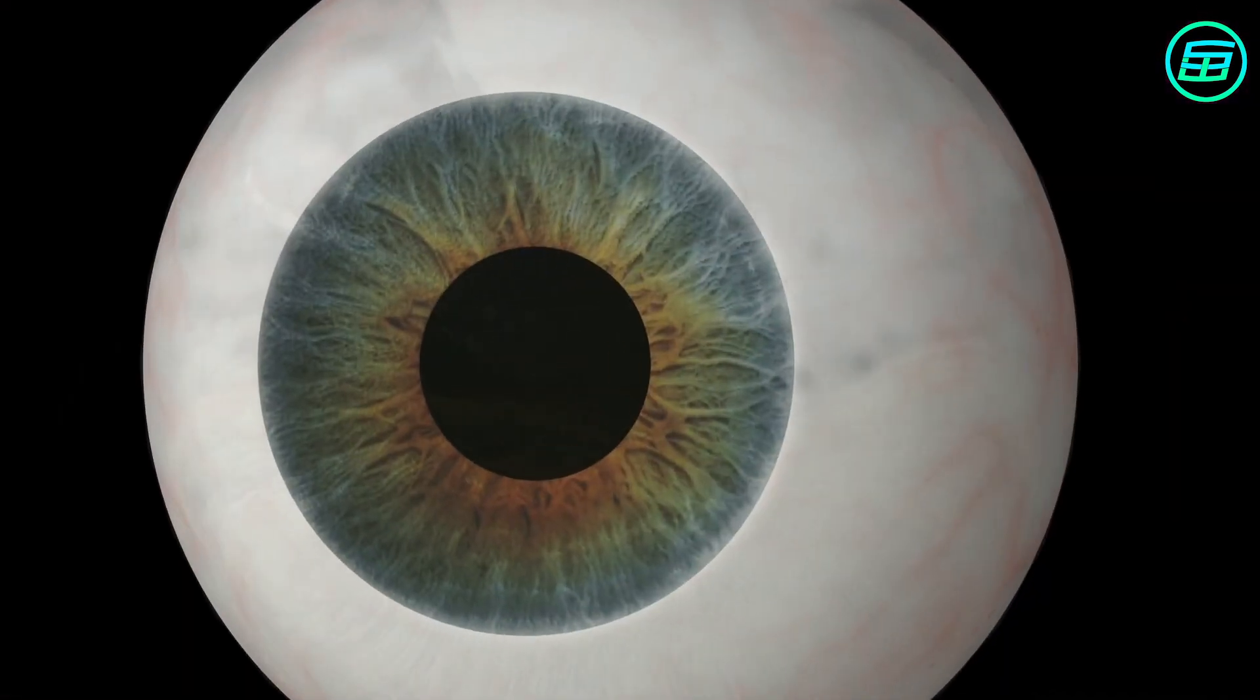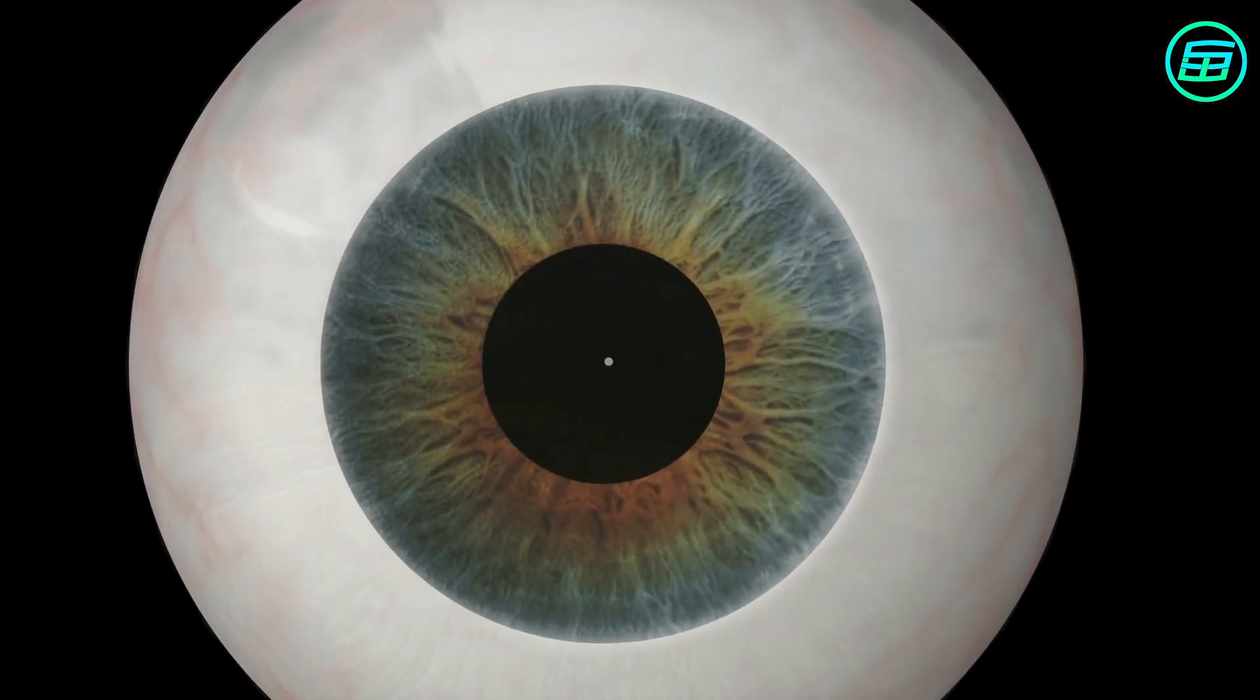Colors are light of different wavelengths and light in turn is a form of electromagnetic radiation. Our eyes have three different types of cone cells which are sensitive to the colors red, green, and blue. We talked about the nature of color in another video.